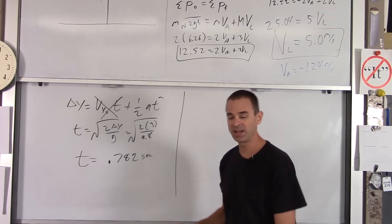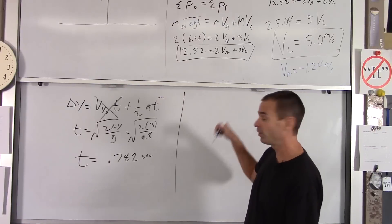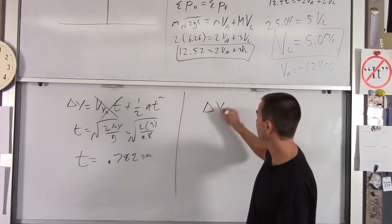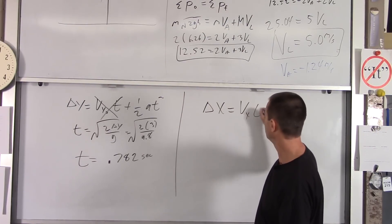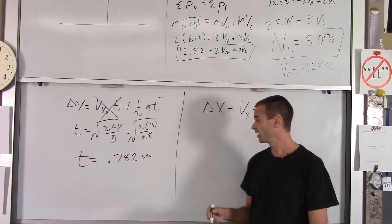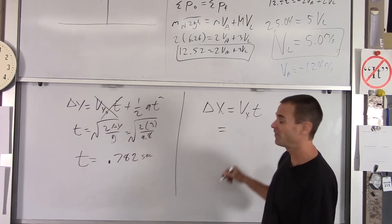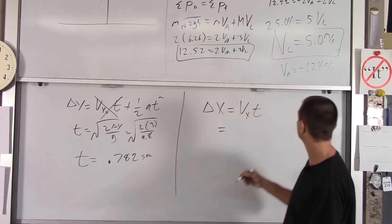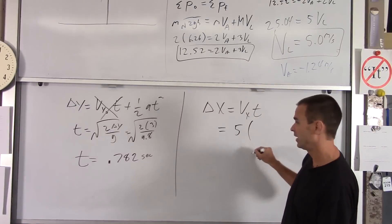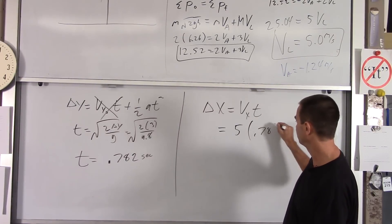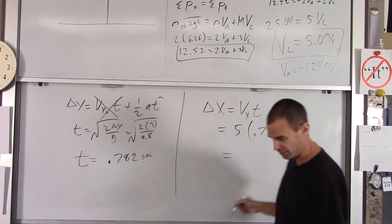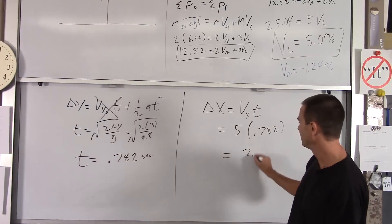And then where does he land? Well, now that's horizontal motion. And we just use delta x equals Vx times t. There's no acceleration horizontally, so we don't have to worry about that. We know Vx. That was Vl. That was our launch velocity, which was 5. And then we got 0.782 seconds. And you get 3.91 meters approximately.